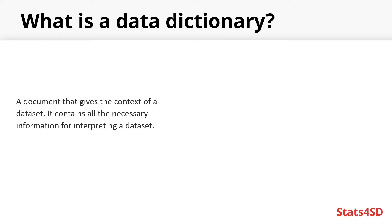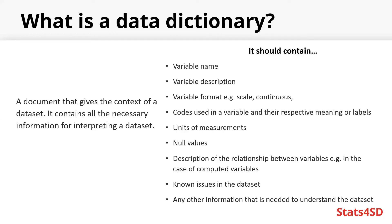In a data dictionary it should contain, for example, the names of the variables, the description of the variables used, any format for the variables — for example whether the variables are scale or continuous data — and the codes used in a variable and their respective meaning or labels, any units of measurements, the codes for missing values, if any, a description of the relationship between variables — for example in the case of computed variables — any known issues in the dataset, and any other information needed to understand the dataset.